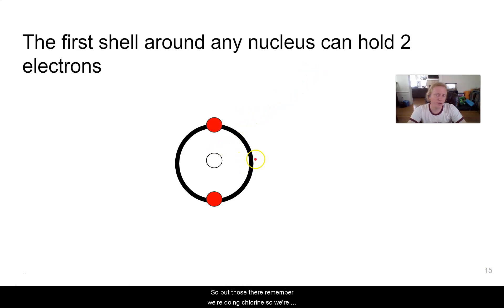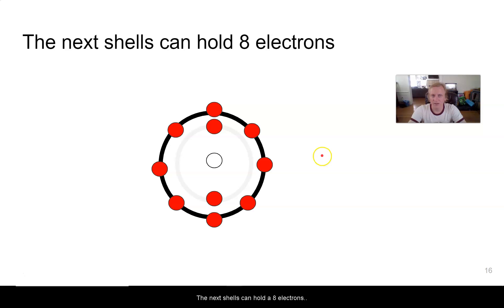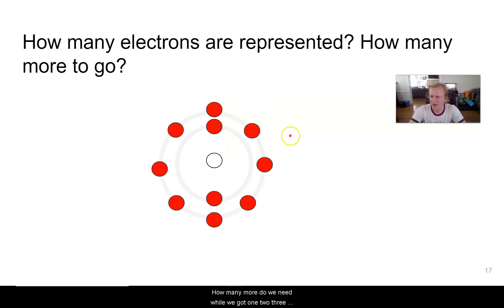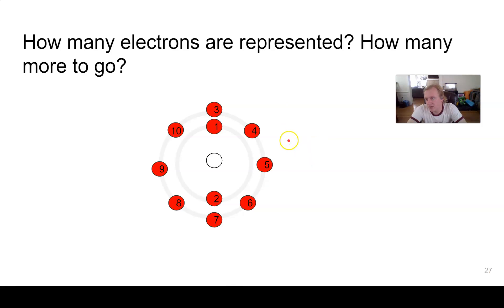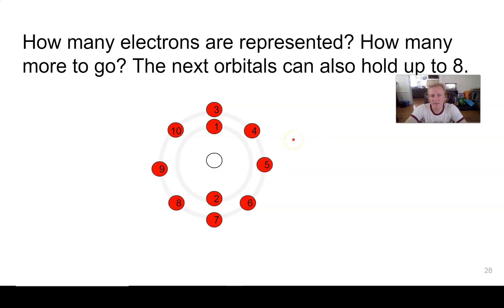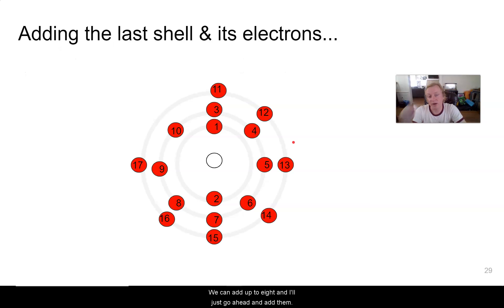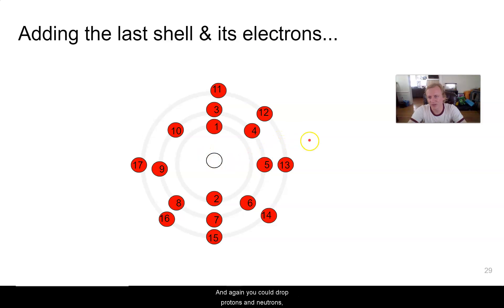The first shell holds a maximum of two electrons, so we place two there. The next shells can hold eight electrons each. Filling those in, we count up to ten electrons total and need seven more. After adding those seven to the third shell, we now have all 17 electrons — this is our Bohr model of chlorine. You could draw protons and neutrons, but most chemists don't bother.